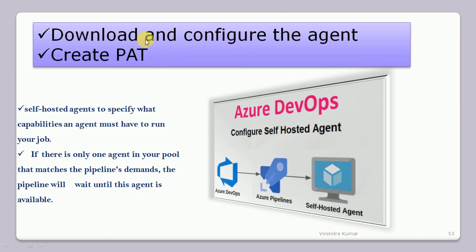We will talk about how to download and configure the agents. If you want to run scripts on your local system and make it an agent — whether it's a Windows machine, Linux machine, or any OS — you need to download and configure the agent. You also need to create a PAT, which means Personal Access Token. Using this Personal Access Token, you can authenticate your personal laptop to connect with Azure DevOps. I will show you how to create and configure it.